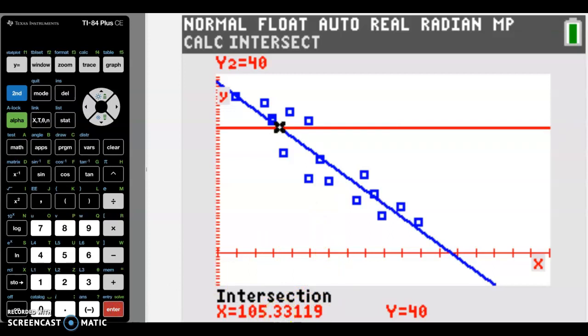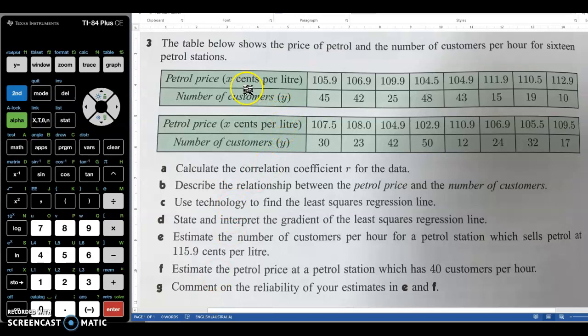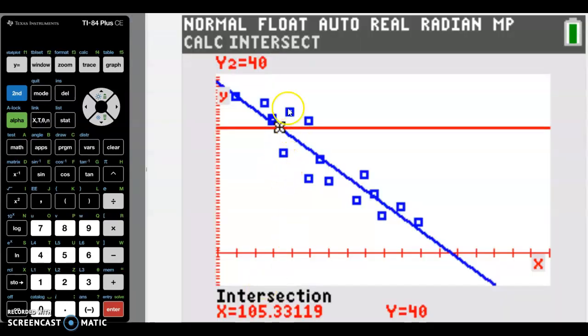Just remember that anything inside this range here between all the points that are given is interpolation. So it's more accurate. And anything outside here is extrapolation. So that's less accurate because we're predicting into the future or predicting into the past. And I hope you found that useful. Thanks for watching.